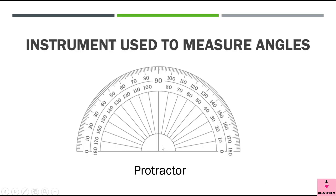Now this is a protractor. You have already seen it in my previous videos and it is used to measure angles. It has two scales — one is the outer scale and the other one is the inner scale. The zeroes of the inner and outer scale are in opposite directions. The 180 degrees of the inner and outer scale is also in the opposite direction. The inner as well as the outer scale only have 90 degrees in common. I have already taught you how to use the protractor to measure angles as well as to draw angles.